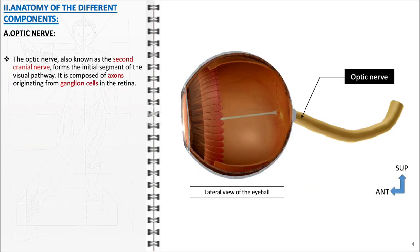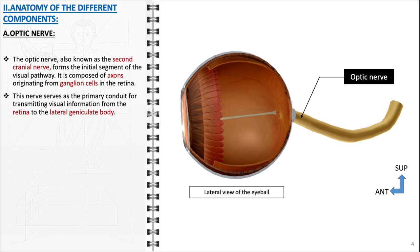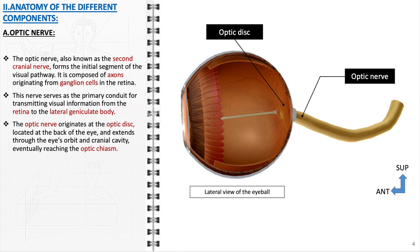The optic nerve, or the second cranial nerve, is a crucial component of the visual pathway, beginning its journey as a collection of axons from ganglion cells situated in the retina. These axons converge to form the optic nerve, which emerges from the back of the eye at the optic disc, a point where there are no photoreceptor cells, often referred to as the blind spot. Anatomically, the optic nerve is encased in a sheath of meninges, similar to those surrounding the brain, and is bathed in cerebrospinal fluid. This nerve travels through the bony orbit of the eye and the optic canal, a narrow passage in the sphenoid bone.